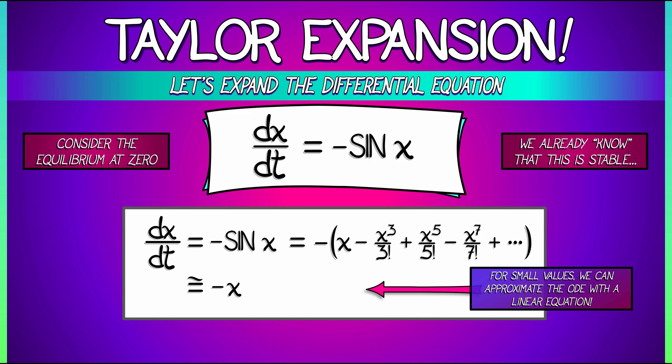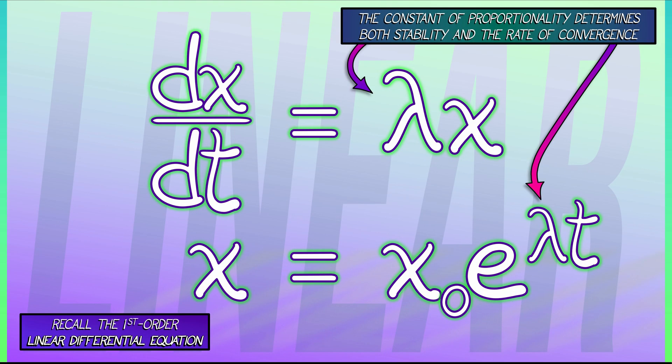Aha, this is really interesting. Because now if I think of the linear ODE, dx/dt equals lambda times x, what's the solution? We know that. That's the initial condition times e to the lambda t.